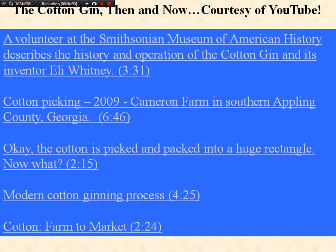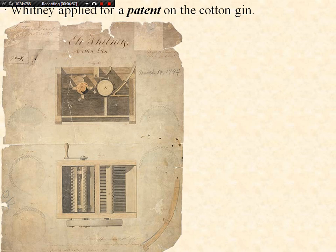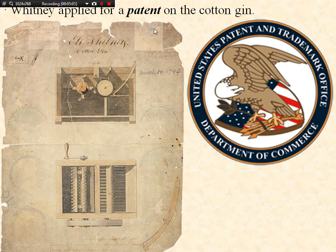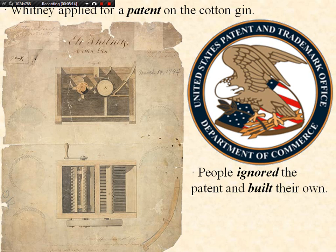Whitney applied for a patent on the cotton gin. A patent is a copyright of an invention — for example, the iPhone has a patent and no one can copy it. However, people ignored patents and built their own, which still happens today. Whitney never became wealthy from this invention.